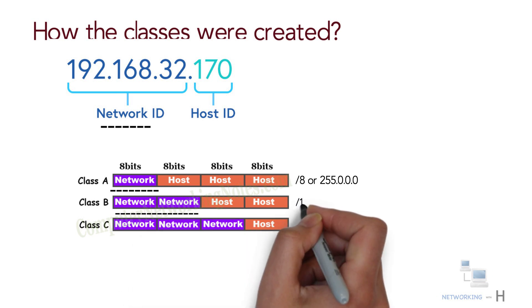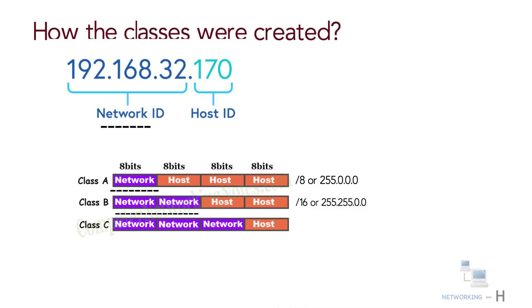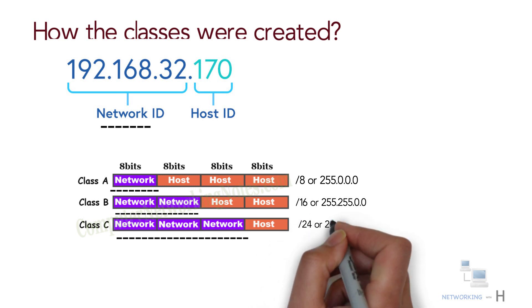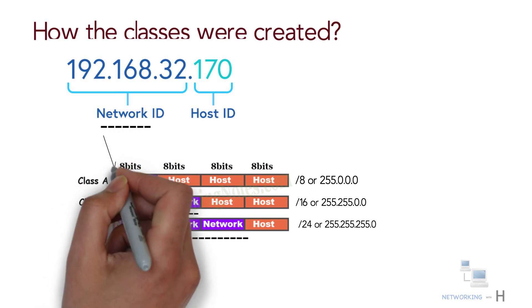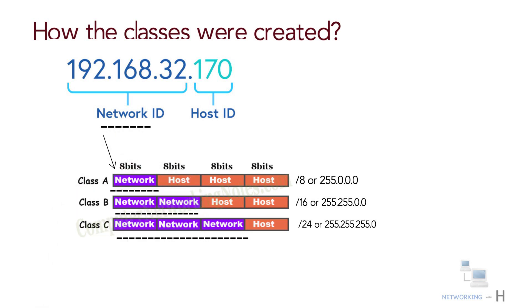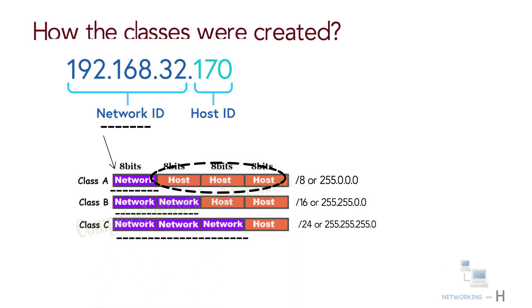In Class C, the first 24 bits are reserved for network addresses, which gives you the subnet mask of slash 24 or 255.255.255.0. For example, for a small number of networks with a large number of hosts, Class A was created. Class C was created for numerous networks with small numbers of hosts.